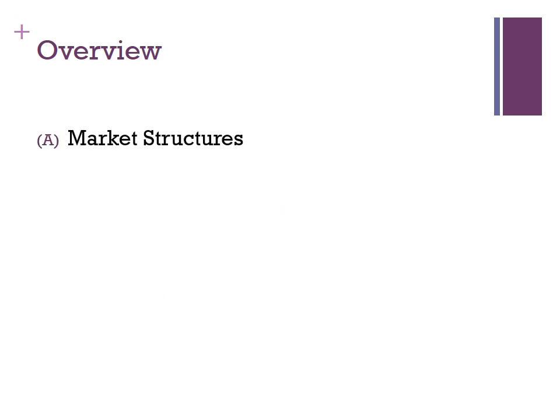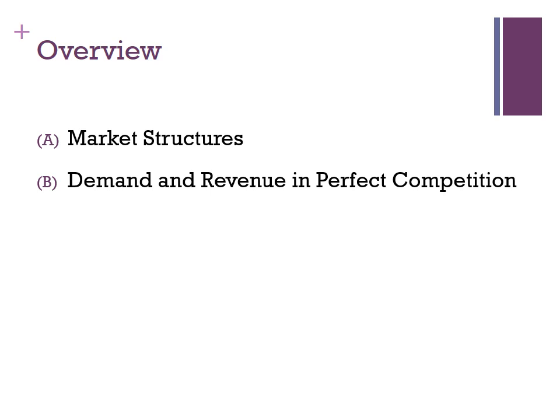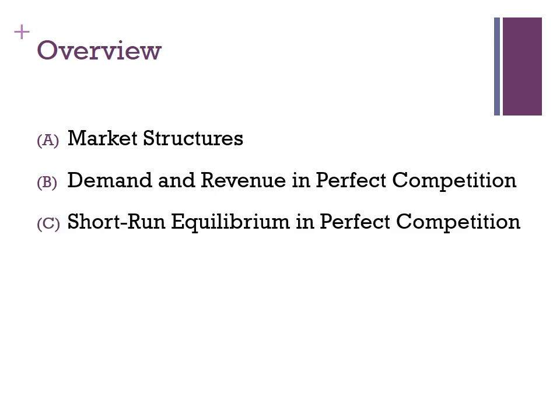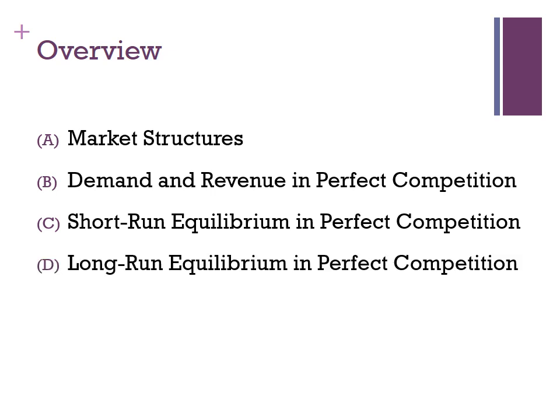The overview of this lecture: First, we are going to differentiate between different market structures. Then, we are going to focus on perfect competition. Firstly, demand and revenue in perfect competition. Then, short-run equilibrium in perfect competition. Long-run equilibrium in perfect competition. And finally, we are going to talk about shutdown and exit decisions in perfect competition.